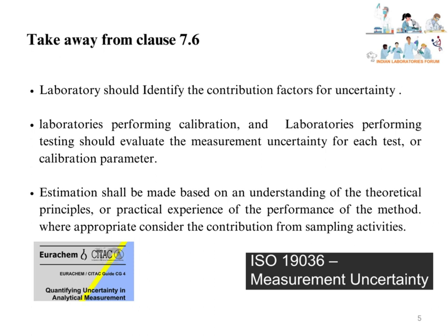There are different guidelines available for evaluation of measurement uncertainty. Examples include: EURACHEM/CITAC Guide CG4 - Quantifying Uncertainty in Analytical Measurement, and ISO 19036 - Estimation of Measurement Uncertainty for Quantitative Determinations.